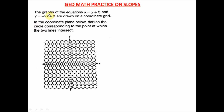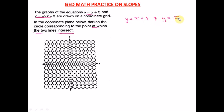Now let's get on to solving these questions. The first question says: the graph of two equations are drawn on a coordinate grid — darken the circle corresponding to the point at which the two lines intersect. There are no points given; on your answer sheet you have to darken the circle at the intersection point. So we need to find the solution to this system of equations. We have y = x + 3 and y = −2x − 3.